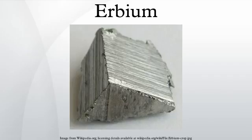Erbium metal tarnishes slowly in air and burns readily to form erbium oxide. Erbium is quite electropositive and reacts slowly with cold water and quite quickly with hot water to form erbium hydroxide. Erbium metal reacts with all the halogens: 2Er + 3F₂ → 2ErF₃; 2Er + 3Cl₂ → 2ErCl₃; 2Er + 3Br₂ → 2ErBr₃; 2Er + 3I₂ → 2ErI₃.